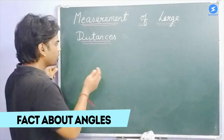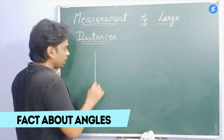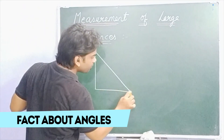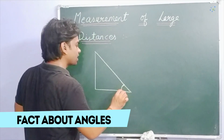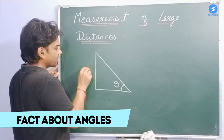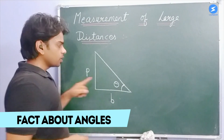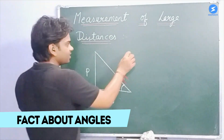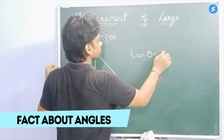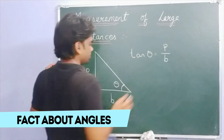Now, when we measure the trigonometric values, we measure theta, and we say that the perpendicular is p and the base is b. Then the value of tan theta is p divided by b — perpendicular by base.